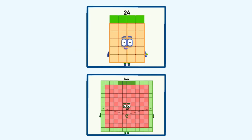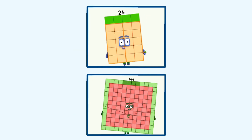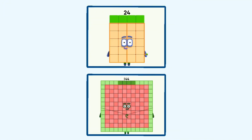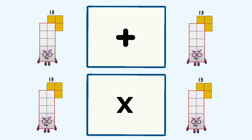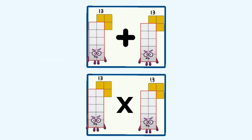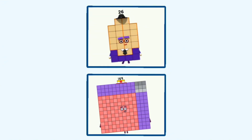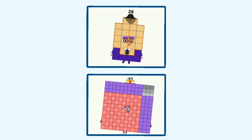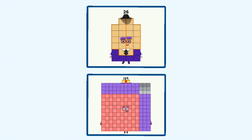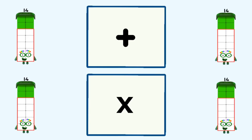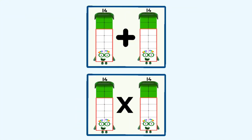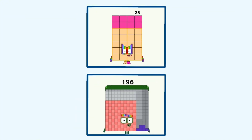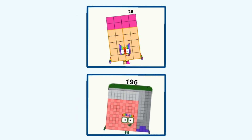12 plus 12 and 12 times 12 equals 24 and 144. 13 plus 13 and 13 times 13 equals 26 and 169. 14 plus 14 and 14 times 14 equals 28 and 196.